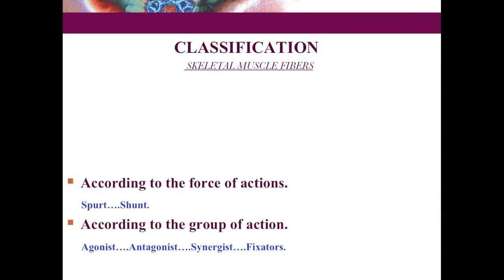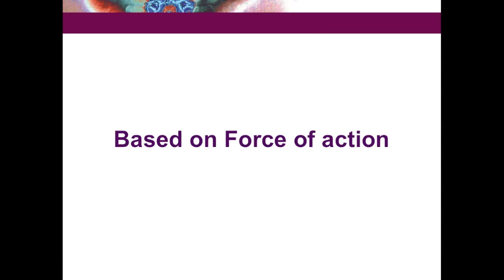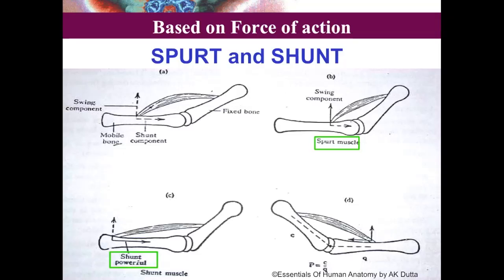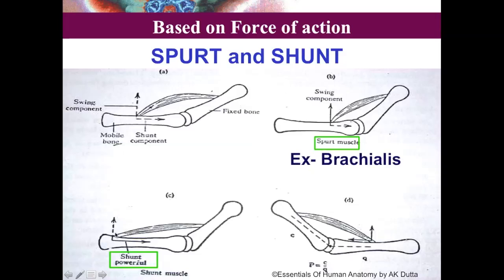Classification based on force of action: during movement, some muscles produce the active swinging movement — these are called spurt muscles — while others contract to maintain joint stability — called shunt muscles. In spurt muscles the origin is away from the joint and insertion is closer; in shunt muscles the origin is closer to the joint and insertion is away. Example of a spurt muscle is brachialis; example of a shunt muscle is brachioradialis.